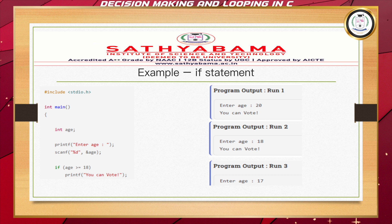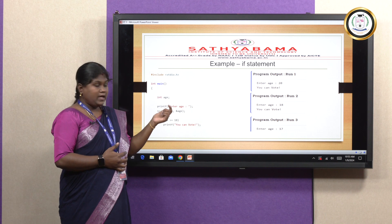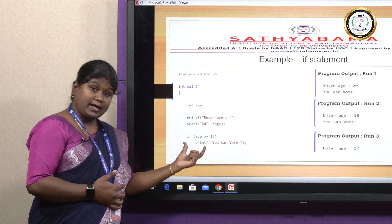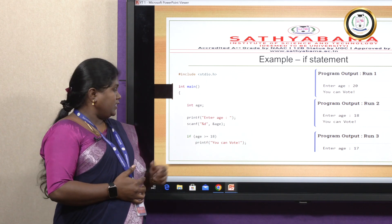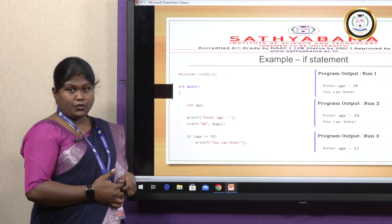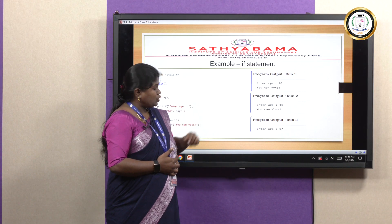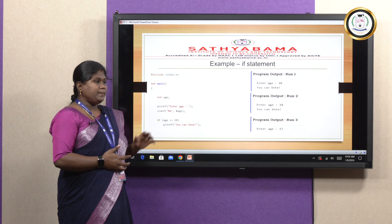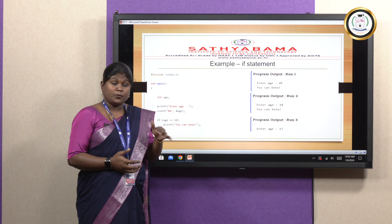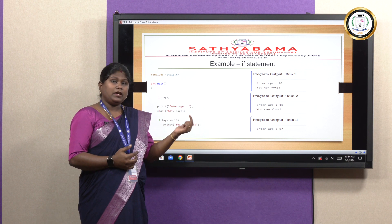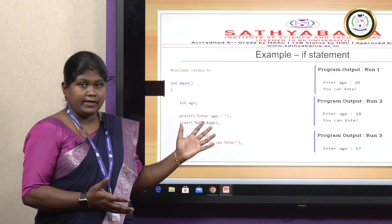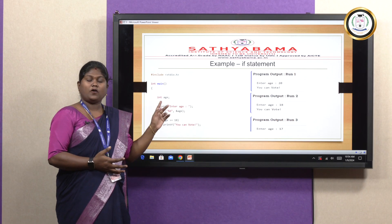Here we are checking for the eligibility of voting. I have given a variable 'age', and we receive the age using a scanf statement. I'm placing a condition: age greater than or equal to 18. If the condition is true, this block will get executed and you'll get the result 'you can vote.' With age 20, you get 'you can vote.' With age 18, since we have placed equal, the output is still 'you can vote.' With age 17, the drawback of simple if becomes clear: if the condition is false, we don't have an option. We'll not get any output and no error either. That is the drawback of simple if statement.